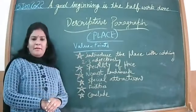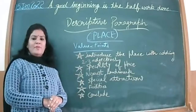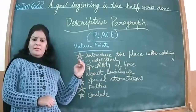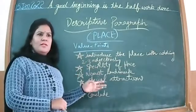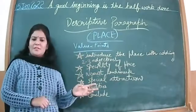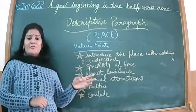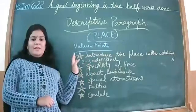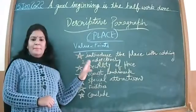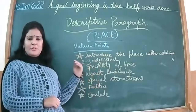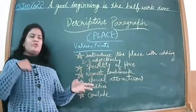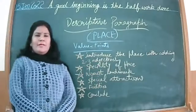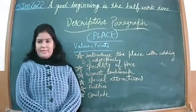Descriptive paragraph of place. We have done 'person' - in that we covered the relation with that person, physical description, personality description, and personality traits. Now when we describe a place, first of all we introduce the place by adding two or three adjectives, or minimum one adjective should be there - telling the quality of that place.